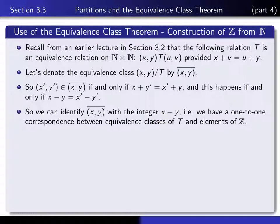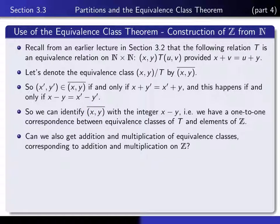So now we have a one-to-one correspondence between equivalence classes of this relation and integers. That means we can identify the set of integers with the set of distinct equivalence classes of this relation. But as I said earlier, the set of integers is more than just a set — it also has addition and multiplication on it. So we need to learn how to add and multiply equivalence classes together in such a way that it corresponds to addition and multiplication on the set of integers.